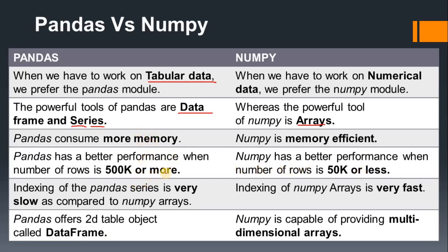The next difference is that indexing of a pandas Series is very slow compared to numpy — meaning when we are accessing elements, pandas works slowly. The indexing of a numpy array is very fast; when we access data by index position, numpy is faster comparatively to pandas.